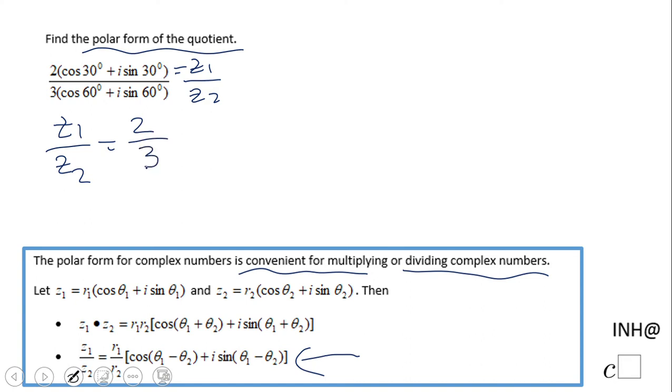In this case, 2 over 3, and then open a parenthesis cosine of—and you'll notice here we have a difference of 30 minus 60. It's very important to follow the order, right? Plus i sine of 30 minus 60 degrees.